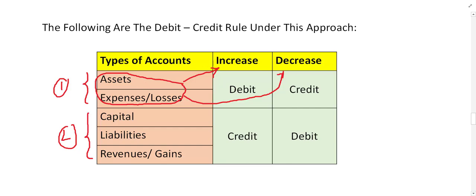On the other side, if you had four computers and you sell one, you now have three — the number of computers decreases. Since a computer is an asset and it decreased, the computer account is credited. The same rule applies to expenses: if the amount of expense increases, it is debit; if it decreases, it is credit.